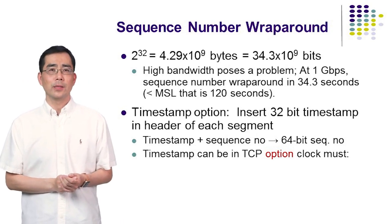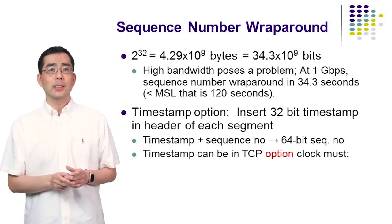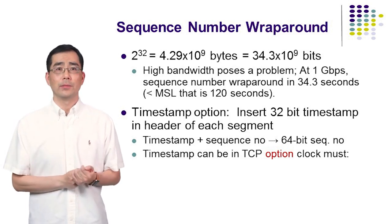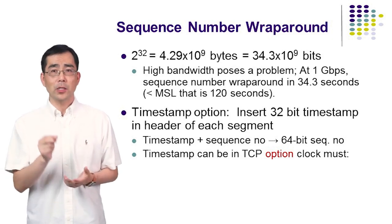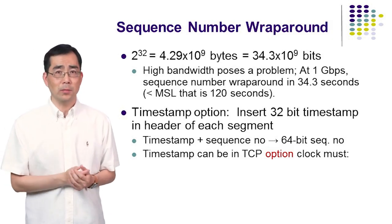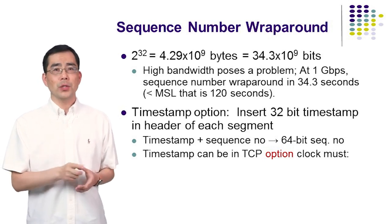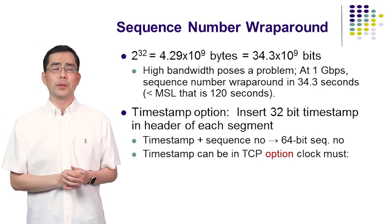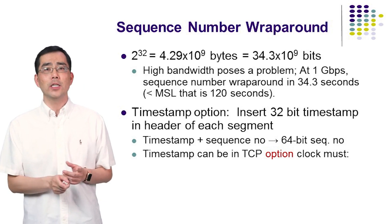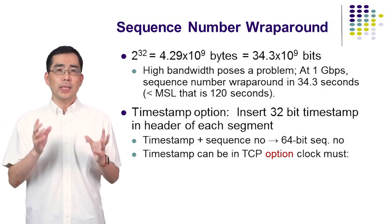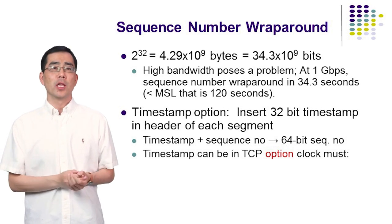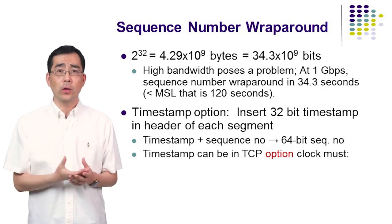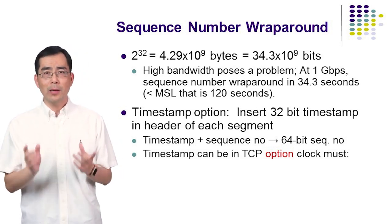The 32-bit sequence number wraps around when 2^32 bytes of data have been sent. At a 1 gigabit per second transmission line, the sequence number may wrap around in just 34 seconds, which is smaller than the maximum segment lifetime. This means new segments could mix up with old segments. When the timestamp option is in use, the sending TCP can insert another 32-bit timestamp into a 4-byte field in the header of each segment it transmits. By combining the 32-bit timestamp with the 32-bit sequence number, we can effectively obtain a 64-bit number to deal with this wrap-around problem.